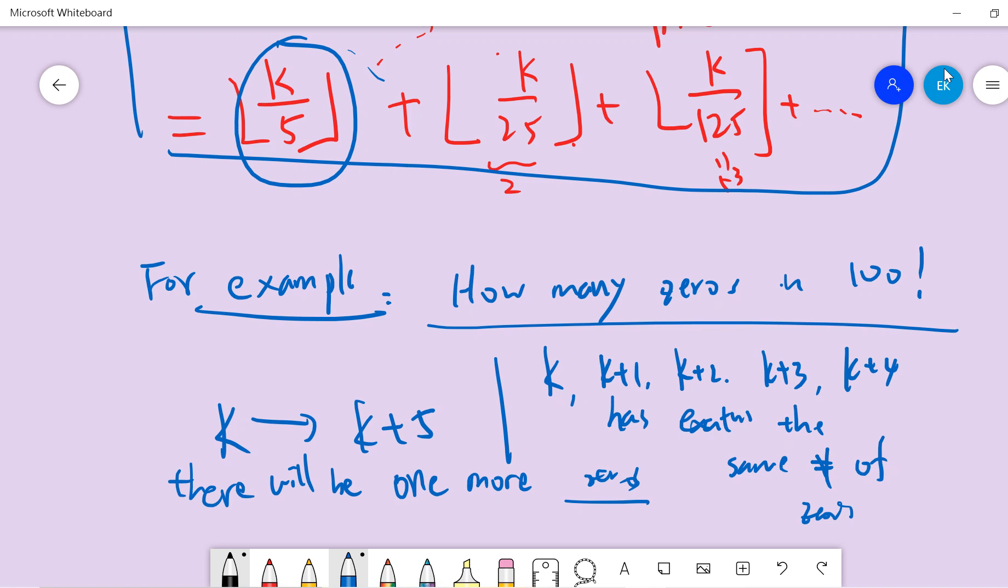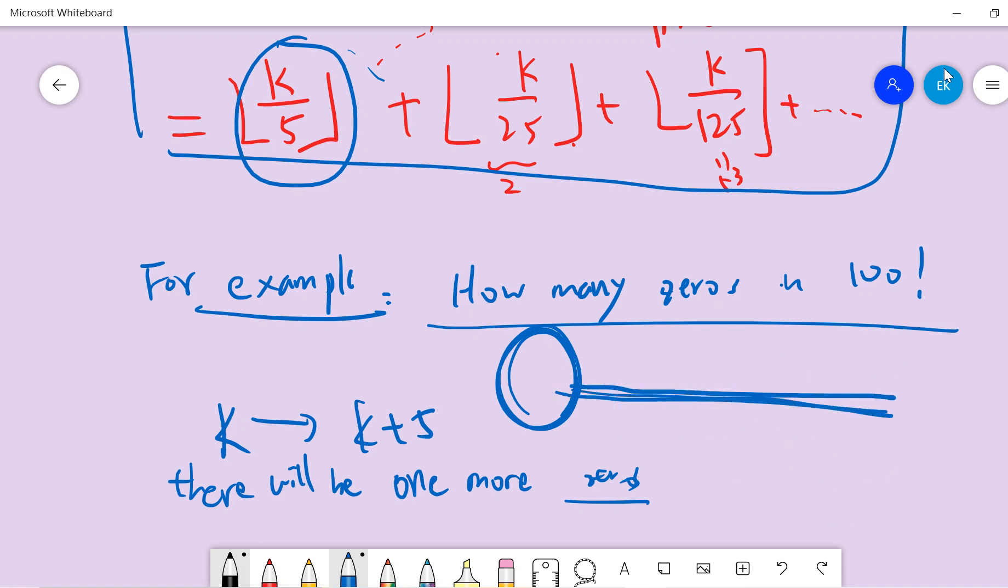No matter what k is, there are always five consecutive numbers with 99 zeros. The answer is fixed. Even if someone asked how many integers have exactly 1000 zeros, the answer is still five.